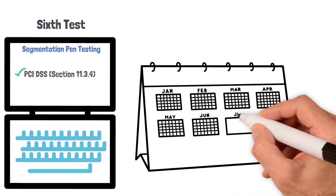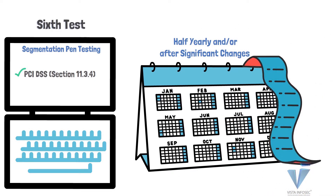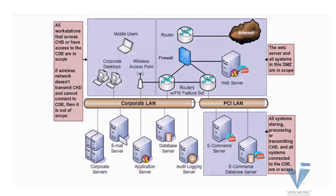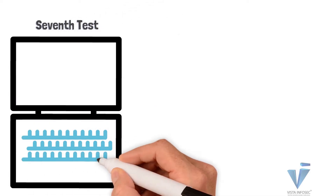Next is segmentation penetration testing under section 11.3.4 of PCI DSS, required half-yearly and/or after significant changes. Many people ask what segmentation pen testing means. You would have a segmented network between your card and non-card environments, and even within your card data environment — your DMZ, application network, database network, web network, internal user networks. Segmentation pen testing checks whether only the allowed traffic is passing between these networks. This is extremely important and cannot be skipped.